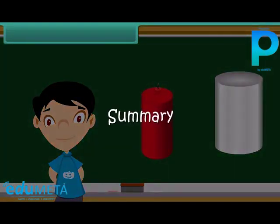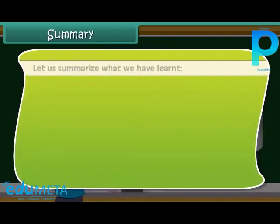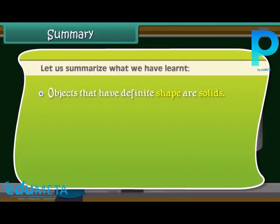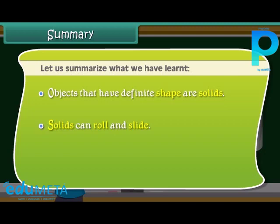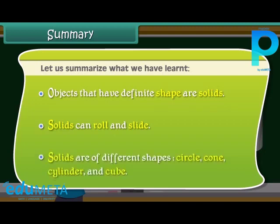Summary. Let us summarize what we have learned. Objects that have definite shape are solids. Solids can roll and slide. Solids are of different shapes: circle, cone, cylinder and cube.